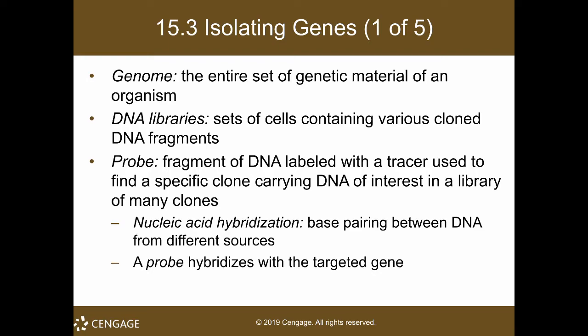Moving on to gene isolation — this is one of the ways to study genes. We use the term genome to describe the entire set of genetic material of an organism; it is the totality of all the genes in your body. Since there are a lot of genes, it is very difficult to study them all at once, so we isolate certain genes and study them one by one. To do that, we usually have DNA libraries. Unlike a normal library with books in a building, a DNA library is basically a set of cells containing cloned DNA fragments — a collection of various DNA fragments, typically inside a petri dish culture.